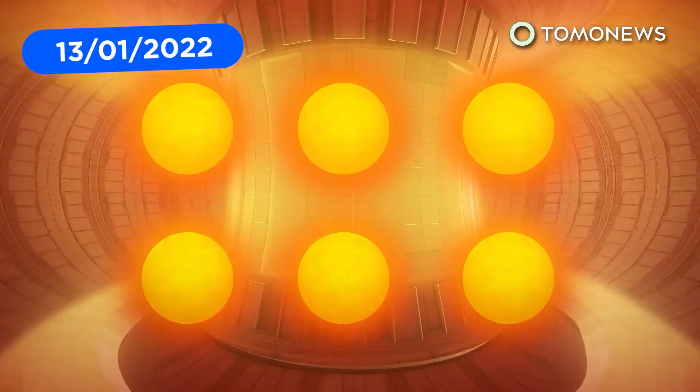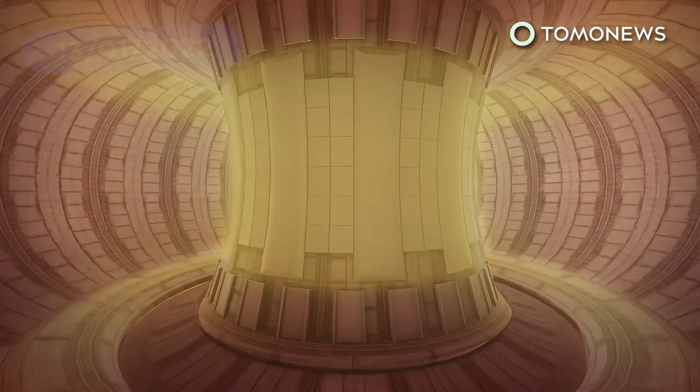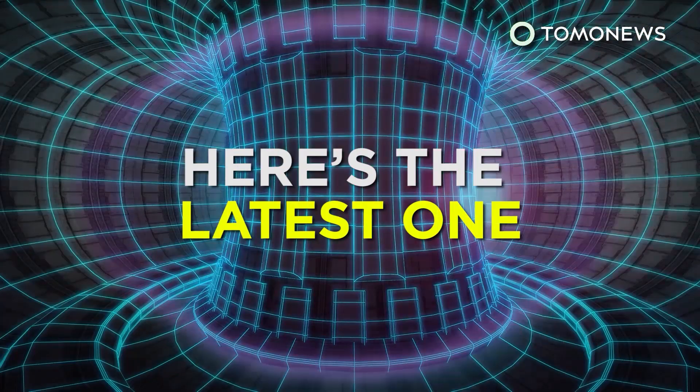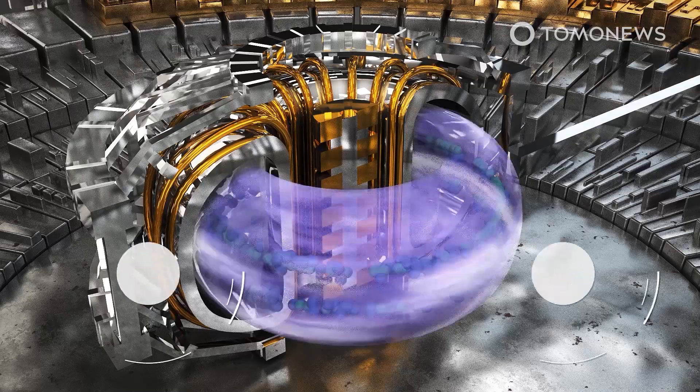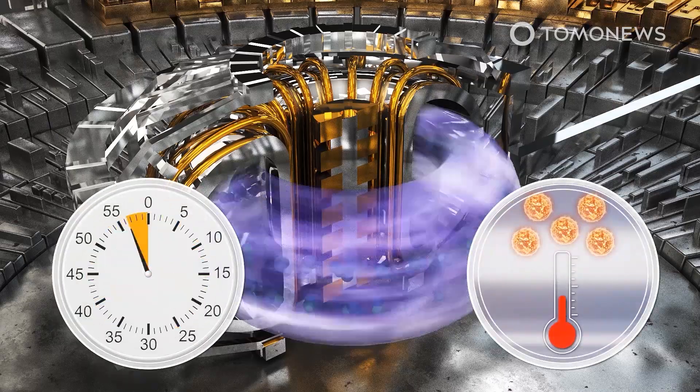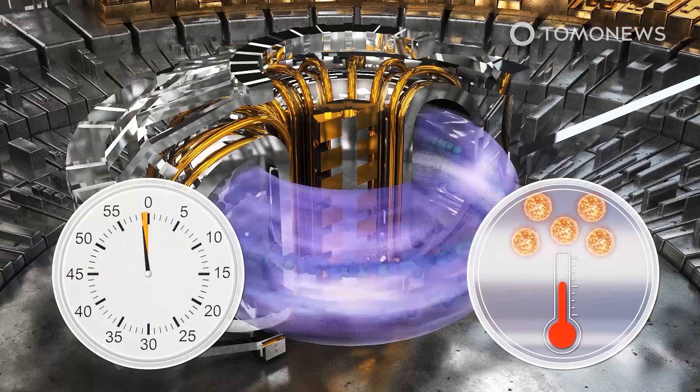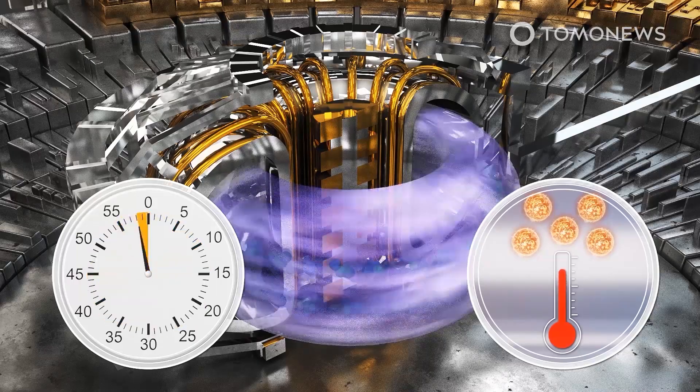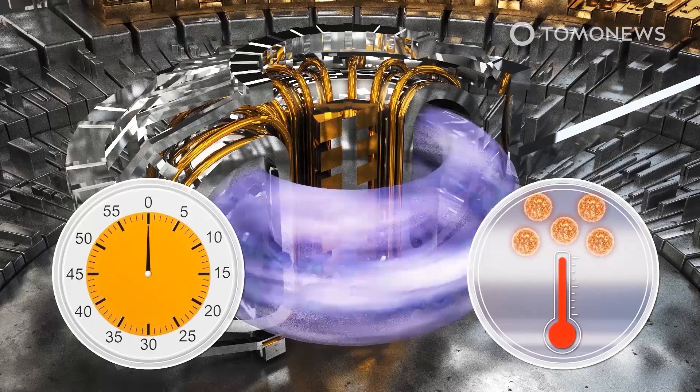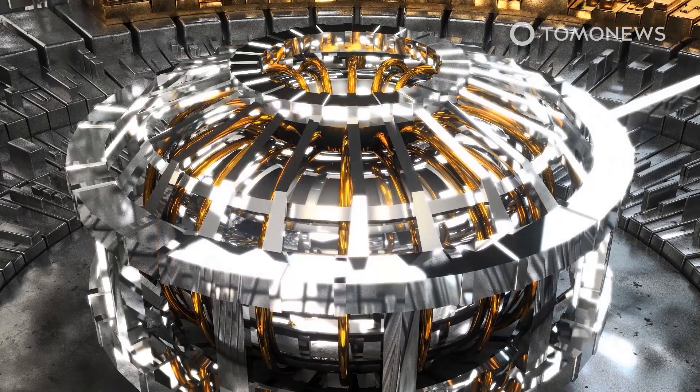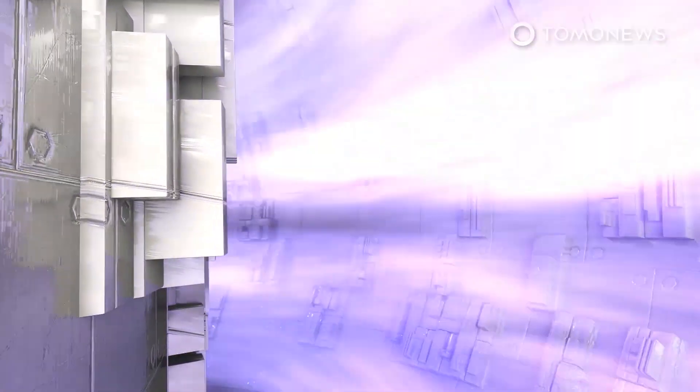Nuclear fusion breakthroughs have been coming thick and fast in the past few months. Here's the latest one. China's experimental advanced superconducting Tokamak fusion reactor has superheated a loop of plasma to 70 million degrees Celsius, or five times hotter than the sun, for a new record of just over 17 minutes, according to Live Science, breaking the previous record of 390 seconds set by France's Torus Supra Tokamak in 2003.